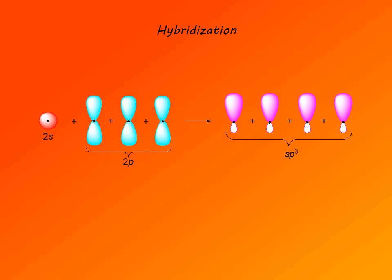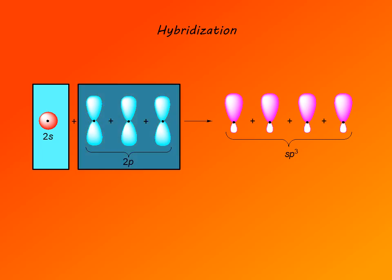If carbon were to form bonds simply from its excited state, it would form 4 bonds, but those 4 bonds would be of two different types. One type would be one bond formed with the carbon 2s orbital — short and strong. Another type would be three bonds formed from carbon 2p orbitals, which would be comparatively longer and weaker. As we know, in alkanes all 4 bonds carbon forms are of the same type.